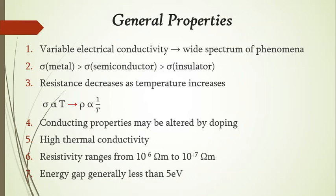A very important point is the energy gap of semiconductors. In metals, the conduction band and the valence band are overlapped, so there is no energy gap. In insulators, the valence band and conduction band are very far from each other in terms of energy, so the energy gap is very large. In semiconductors, the energy gap is generally less than 5 electron volts, making it intermediate between that of a conductor and an insulator.